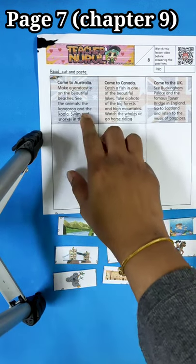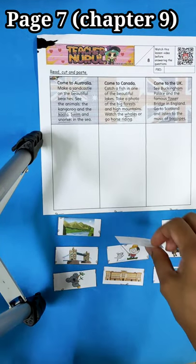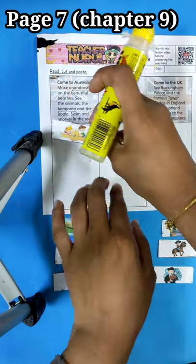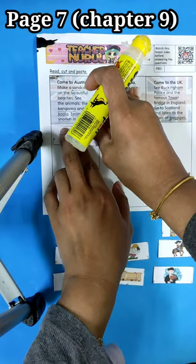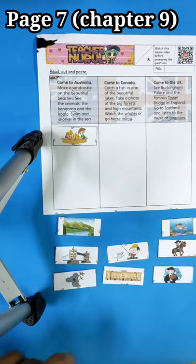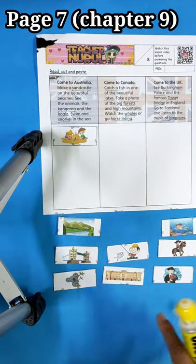Now the first one is make a sand castle. Is there any sand castles? Yes, this one. So we just put a glue at the back of paper and you paste it in the box right below it. Next, we have kangaroo. Any kangaroos? No.